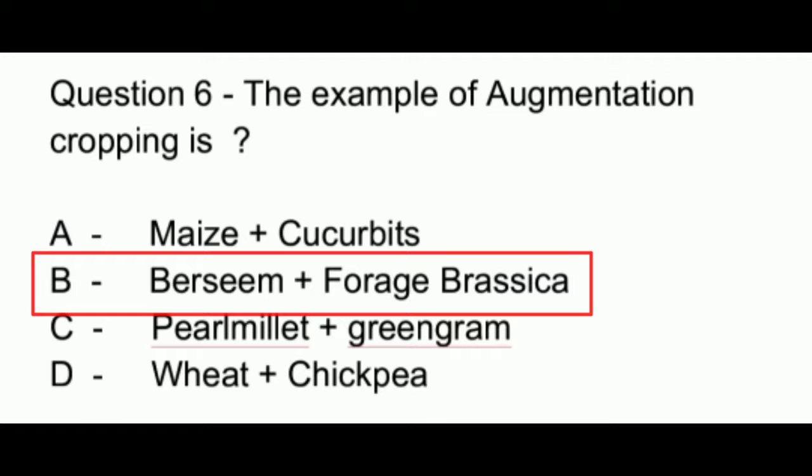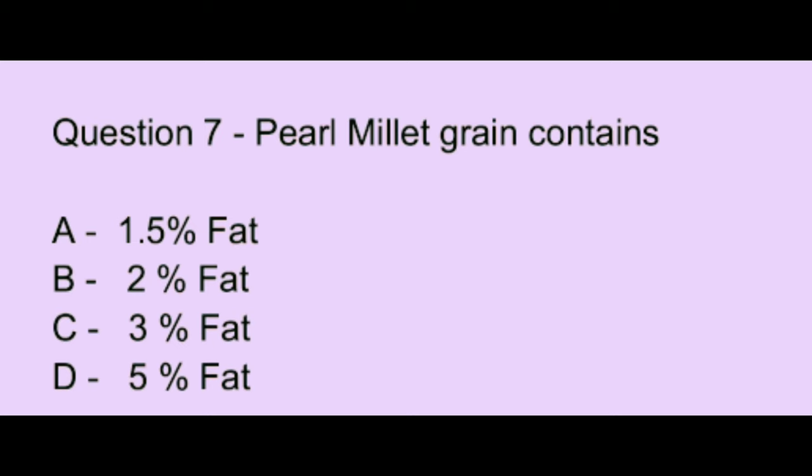Question number 7. Pearl millet grain contains: Option A: 1.5% fat. Option B: 2% fat. Option C: 3% fat. Option D: 5% fat. The correct answer is option D, which is 5% fat.